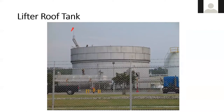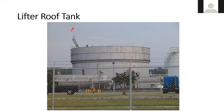This one is over by Tulsa, Oklahoma, and it's called a lifter roof tank. What's unique is that the flag tells us vapor and wind direction. The tank sides go all the way up to where that ladder is — when it gets full with vapors, it rises up there, and then goes back down as the product is drained out of the tank. That's known as a lifter roof tank.